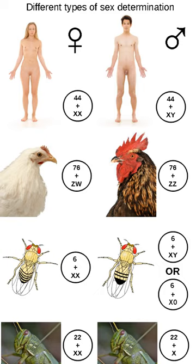Sex determination was discovered in the mealworm by the American geneticist Nettie Stevens in 1903.